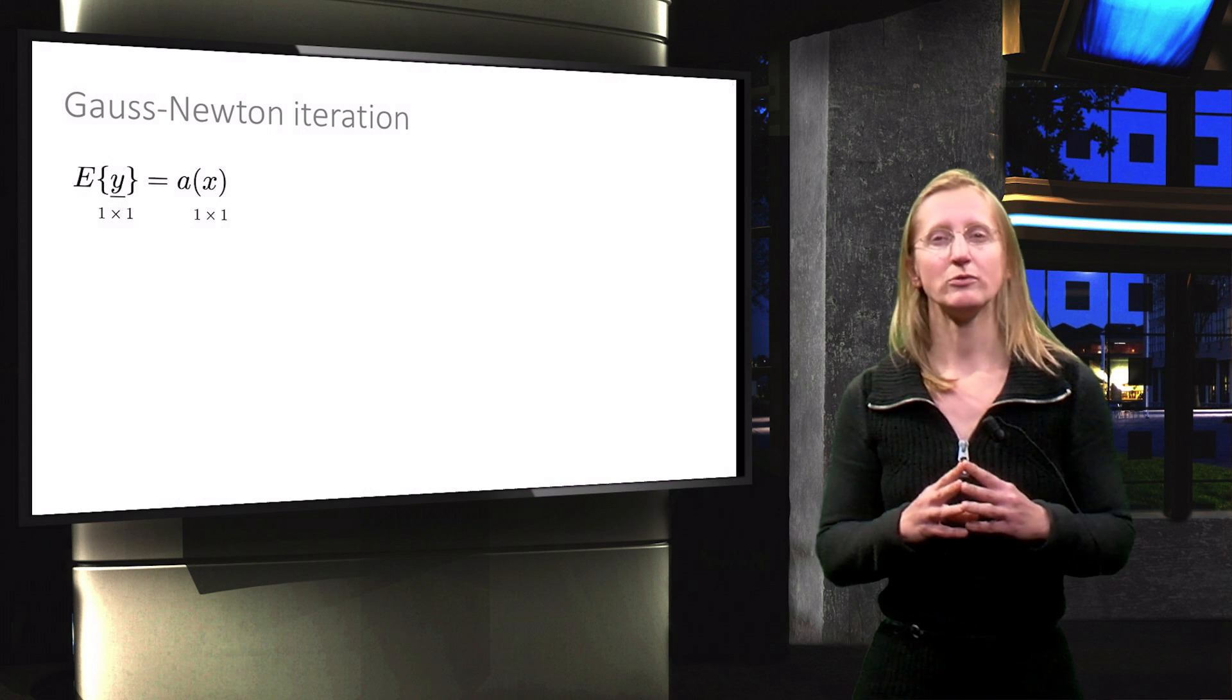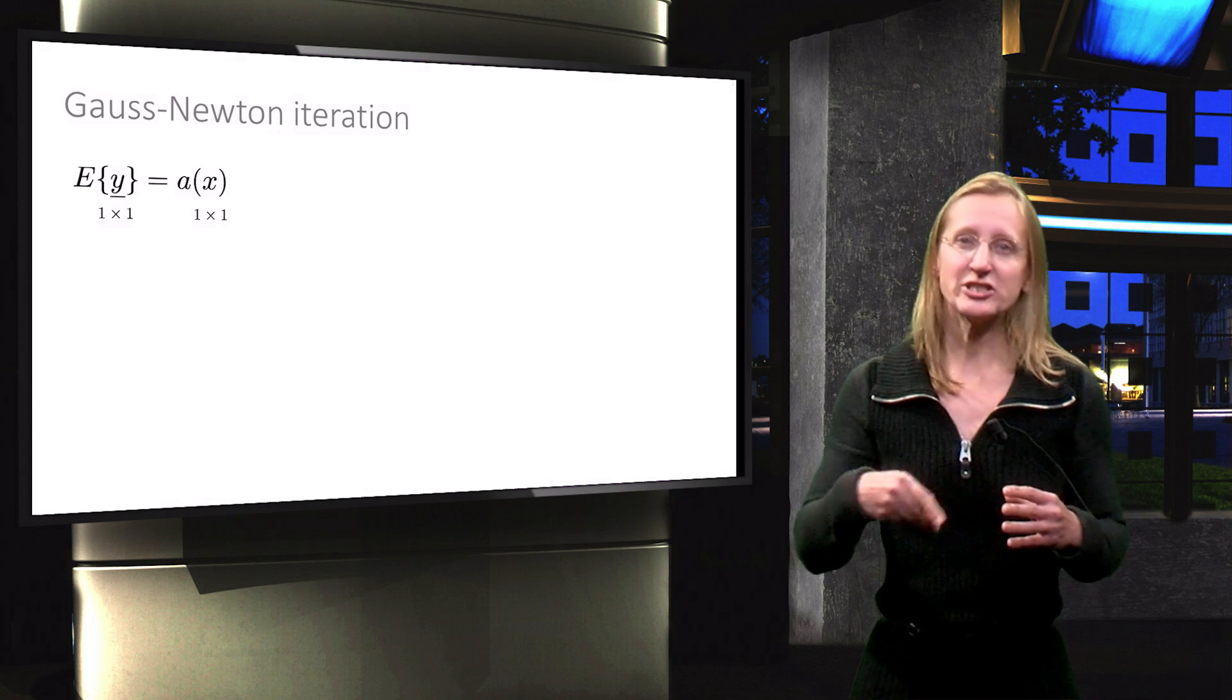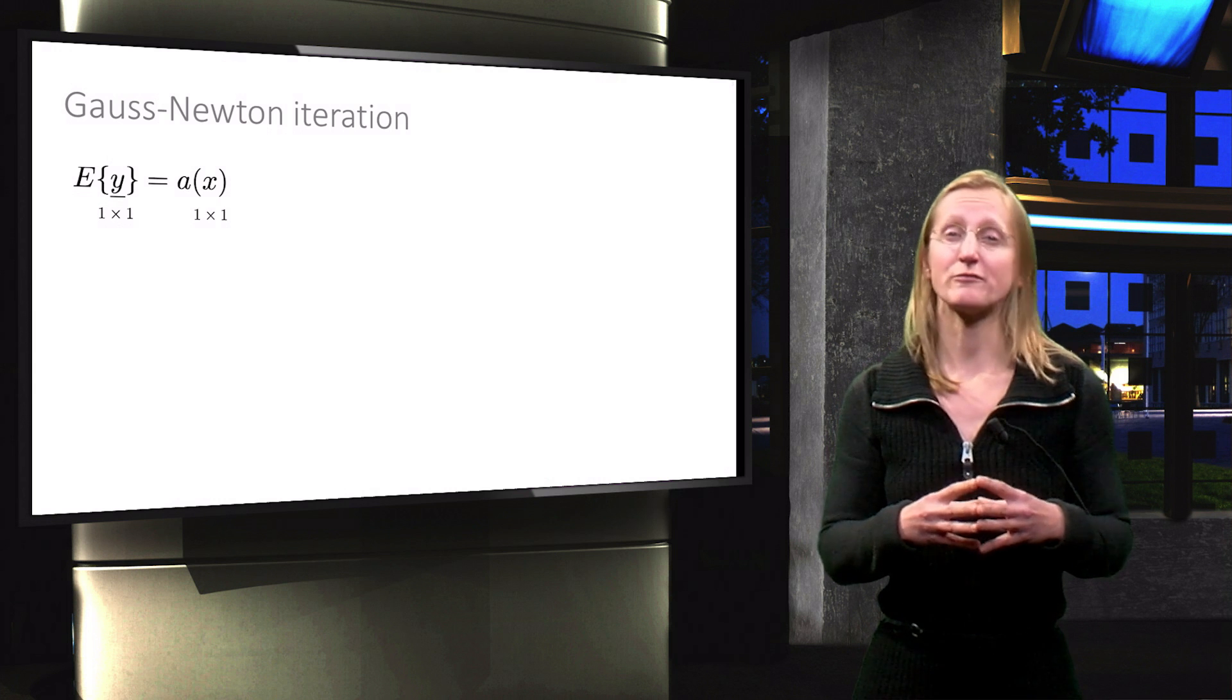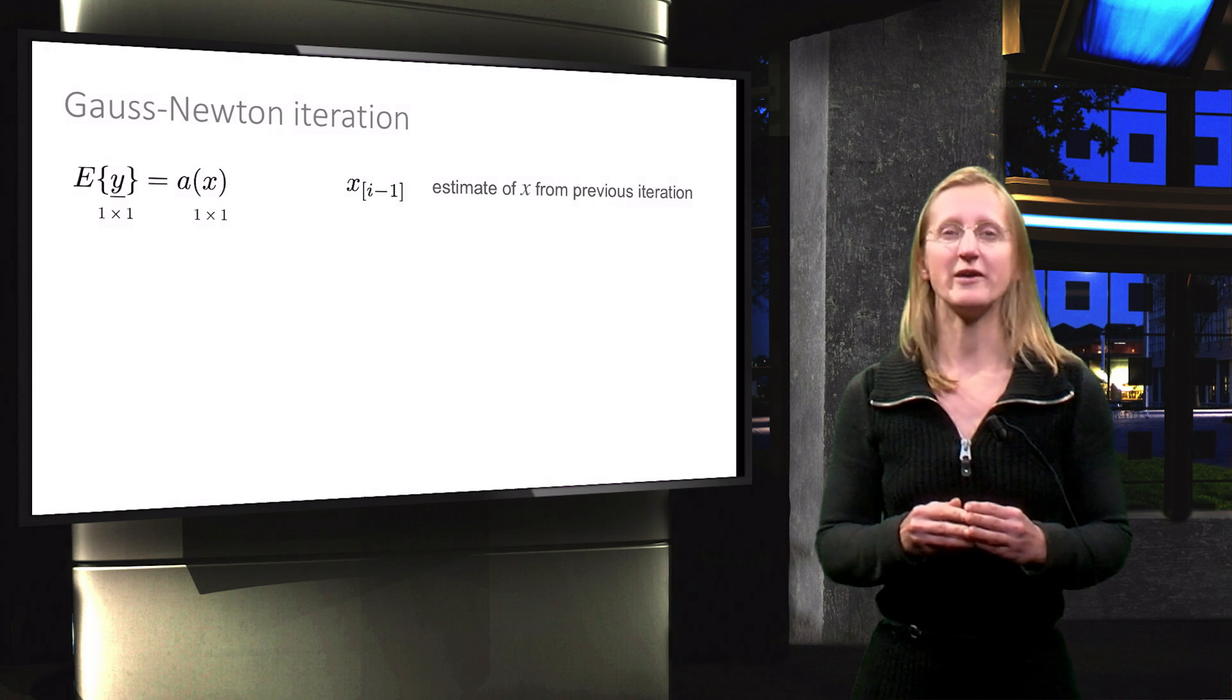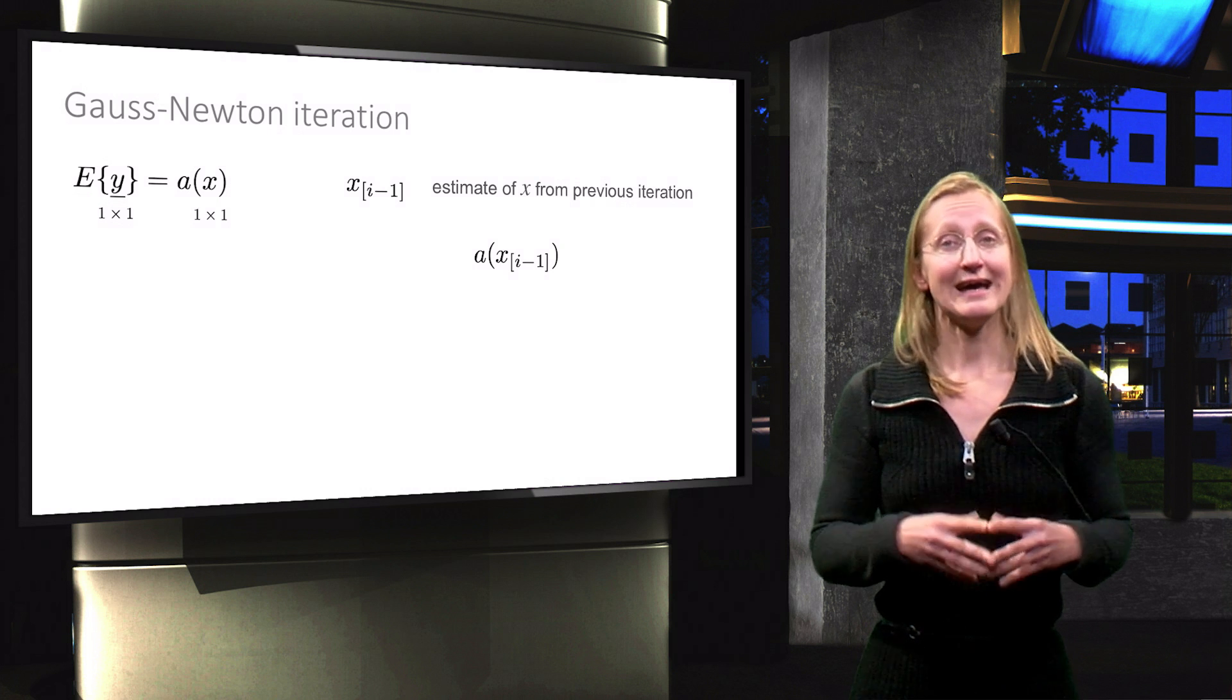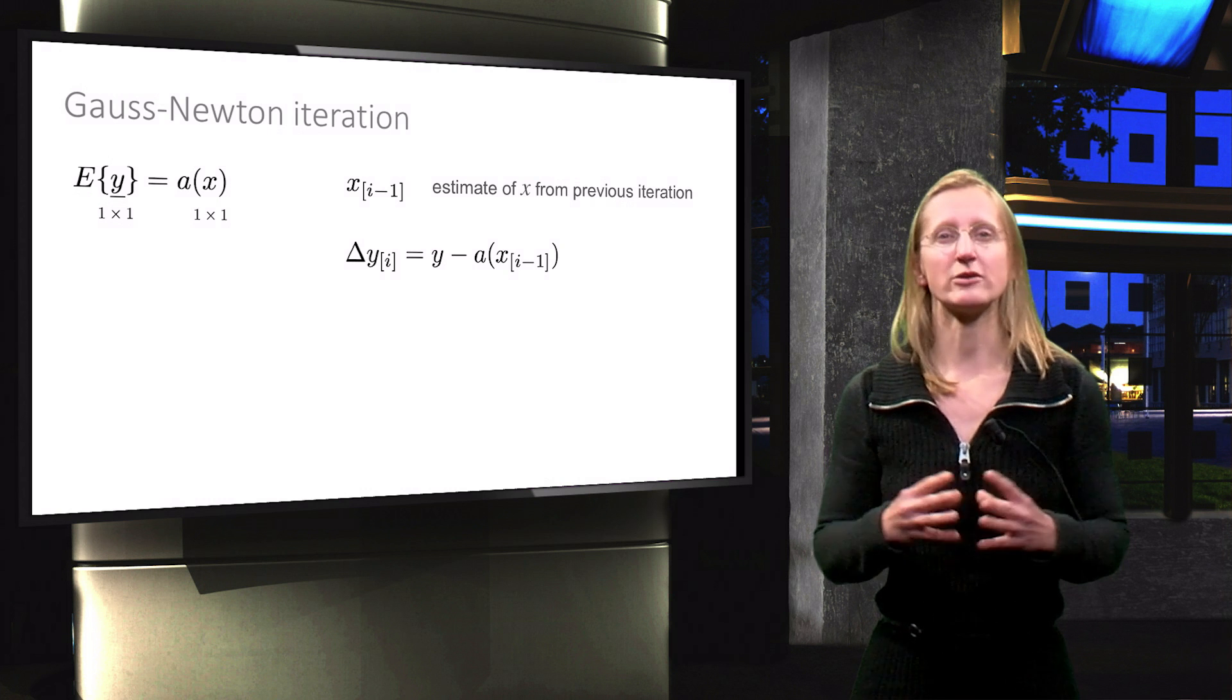Let's review the principle, which is based on an iteration procedure. In each iteration we use the estimate or approximation of x from the previous iteration. Then we solve the forward model to see what the corresponding y value would be with this approximation. And we calculate the difference with the actual observation, giving us delta y.